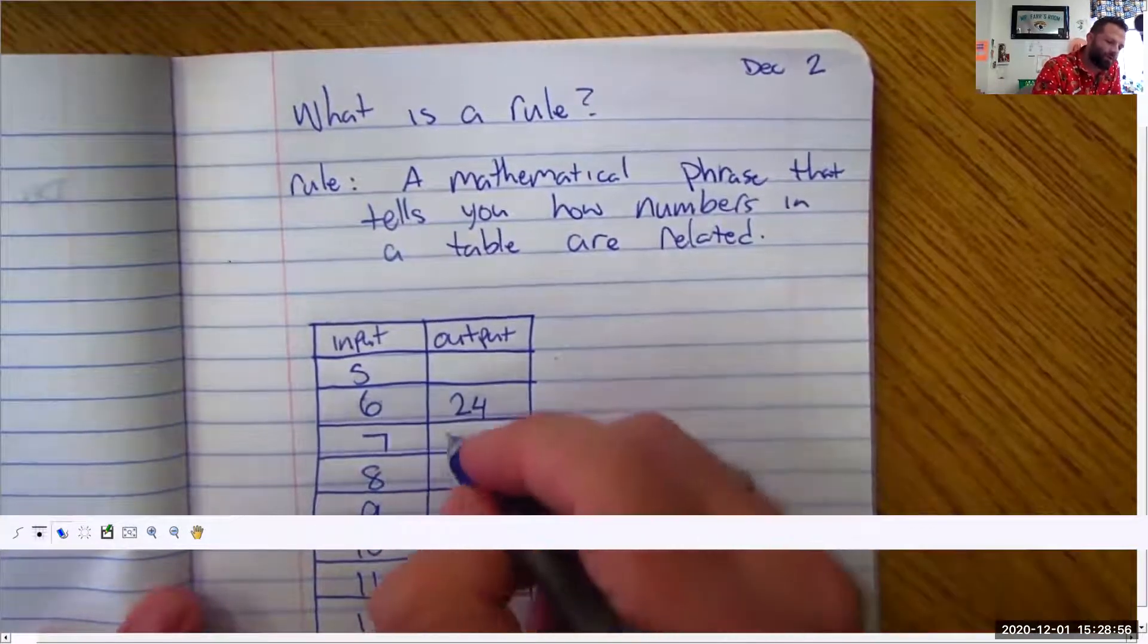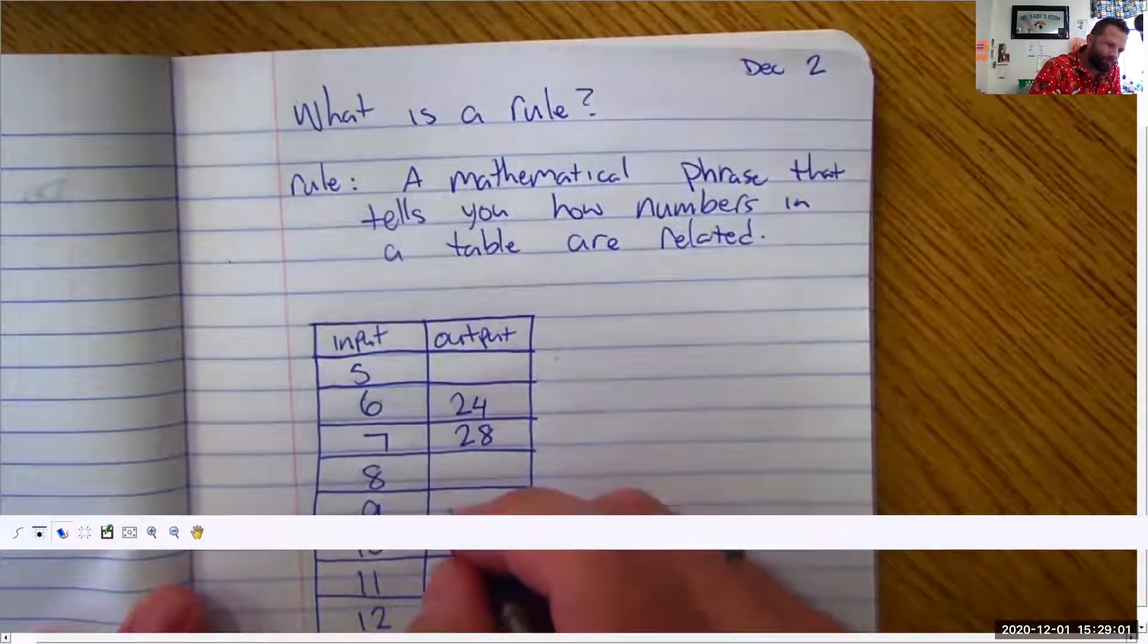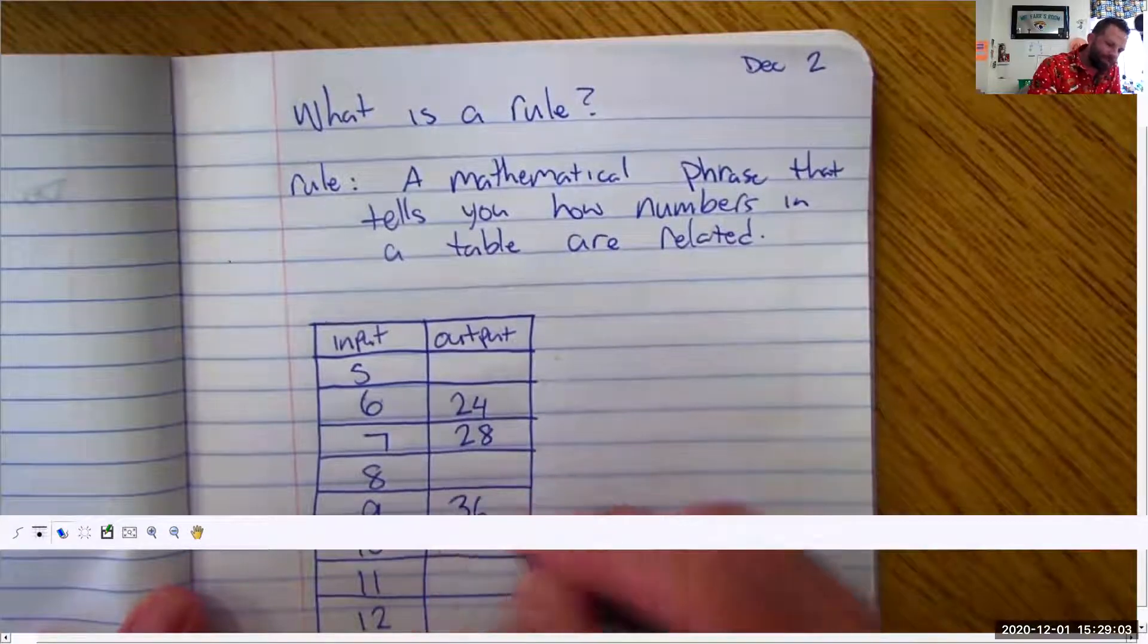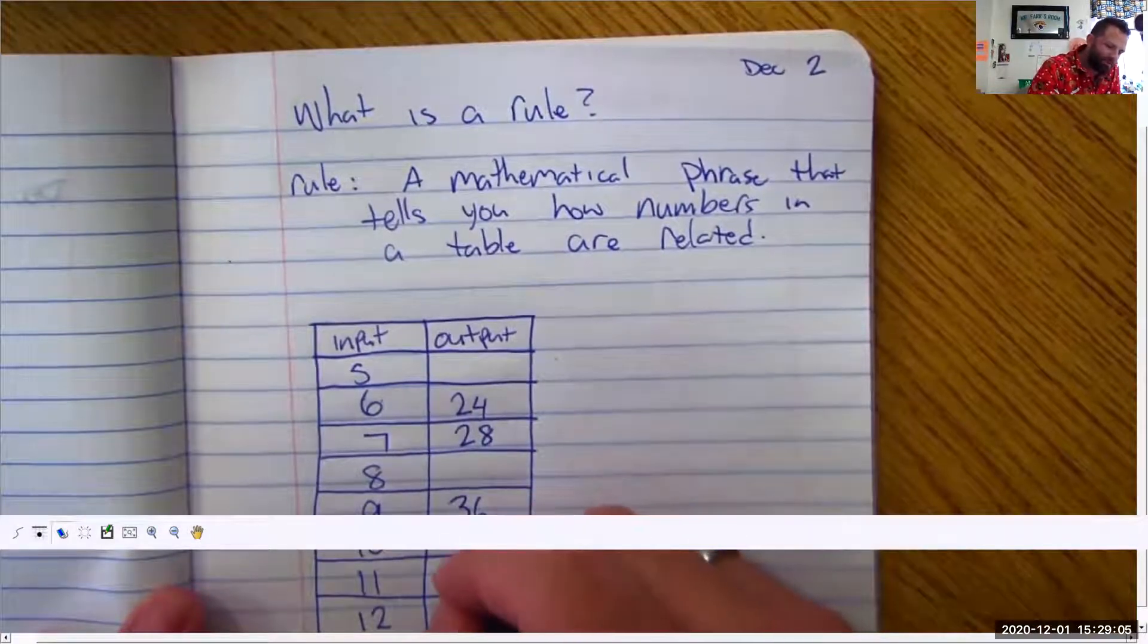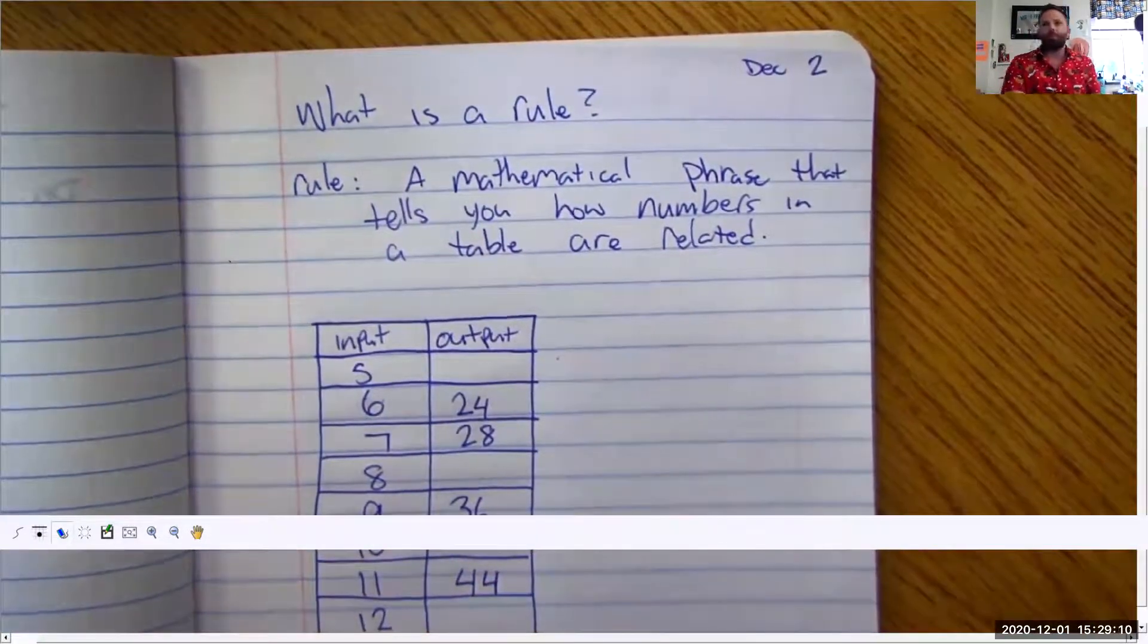You have something twenty-four then you may have something like this twenty-eight. Then you have what would that be thirty-six. You may have forty-four here and now you have to figure out what's happening.